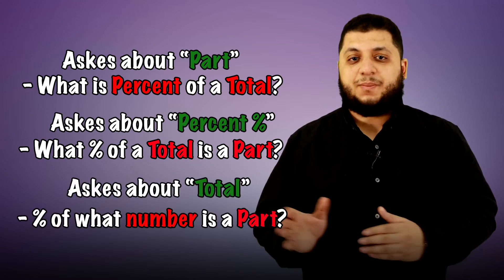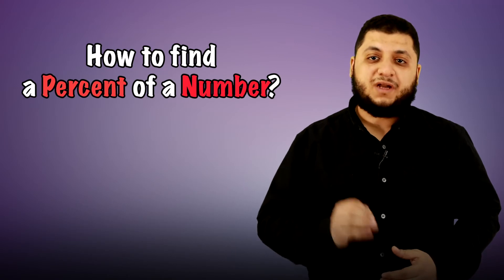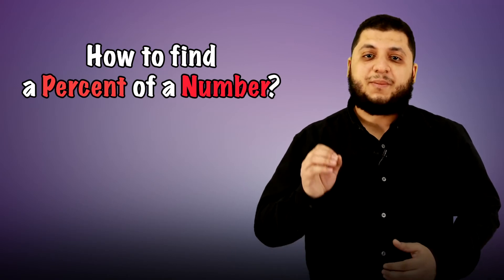How to find a percent of a number? This first type asks about part. For example, in the example we said before, the jacket costs $150 and the discount is 15%. To calculate the discount, you have to find 15% of 150.